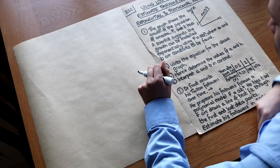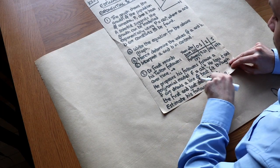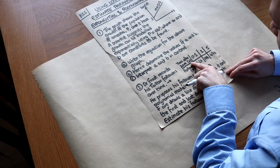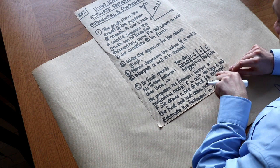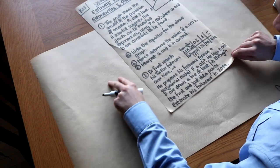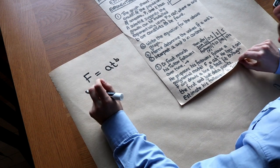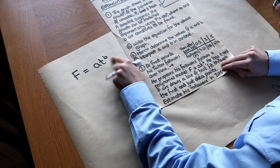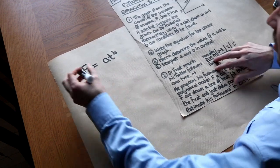We can use this principle for polynomial models too. Dr. Frost records his Twitter followers over time and proposes a polynomial model F equals A times T to the B, where F is followers and T is years after 2019. This is a polynomial model rather than exponential because the variable T is in the base rather than the power. We do exactly the same — log both sides.